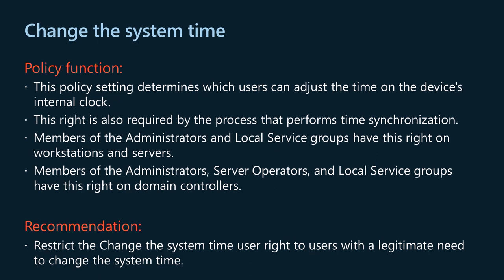The change the system time policy setting determines which users can adjust the time on the device's internal clock. This right allows the user to change the date and time associated with records in event logs, database transactions, and the file system. It's also required by the process that performs time synchronization. By default, members of the administrators and local service groups have this right on workstations and servers, while administrators, server operators, and local service have this right on domain controllers. Restrict this user right to users with a legitimate need to change the system time; the automatic time synchronization process should keep clocks aligned.